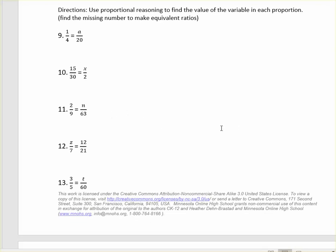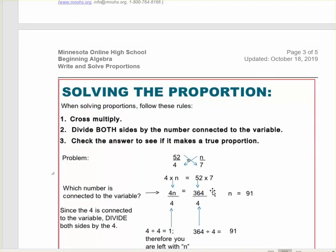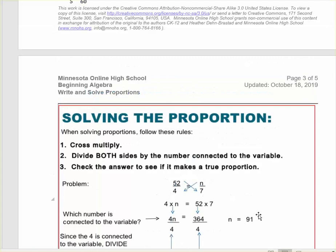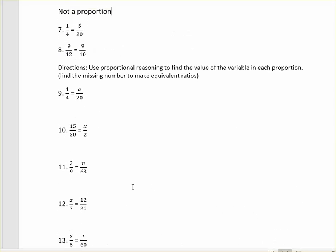For the next section, it says use proportional reasoning to find the value of the variable in each proportion. In other words, they want you to find the missing number that would make this be a true proportion. Doing it with proportional reasoning means basically figure out what the equivalent fraction would be. We can also do it with cross products. So number 10 says 15 over 30 is equal to something over 2. 15 out of 30 means that if you have 30 things, you're selecting 15 of them. Well, 15 is half of 30. So the missing number here is 1, because 1 half is equal to 15 over 30.